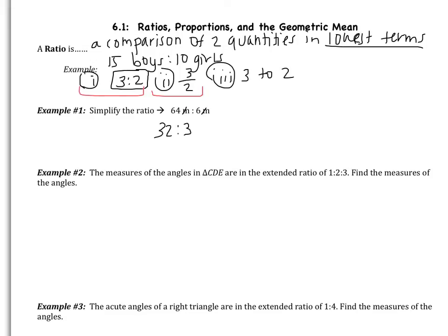Now can I divide them by anything again? 3 is only divisible by 3, and 32 is not divisible by 3. So this is my final answer. You could write it as 32 over 3 or 32 to 3.